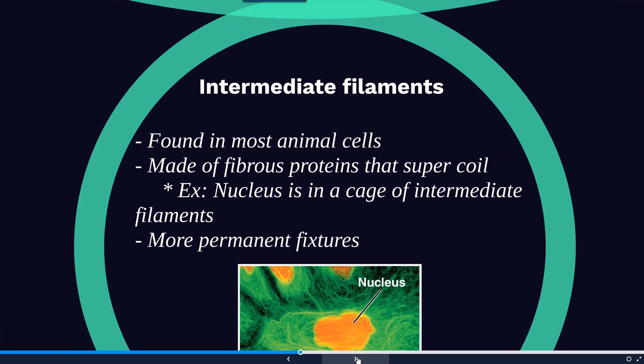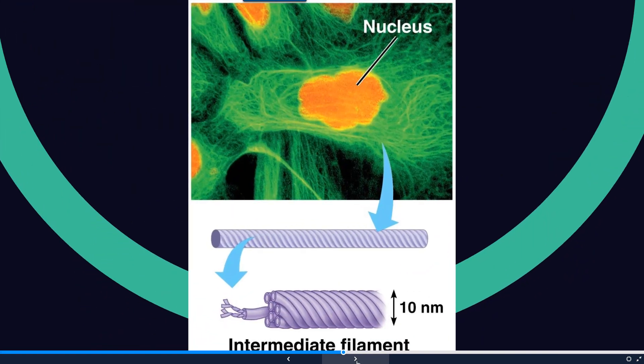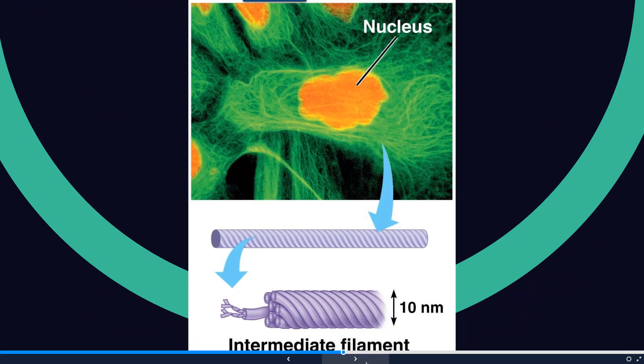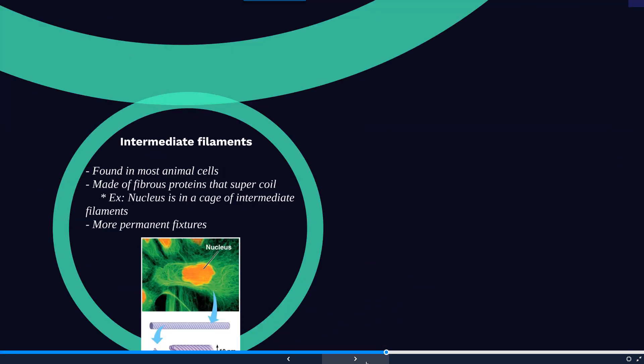Intermediate filaments are found in most animal cells and consist of fibrous proteins that super coil. They usually form more permanent fixtures — a good example being the nucleus, which is found in a cage of intermediate filaments. In this example we can see the nucleus is housed within those filaments shown in green.